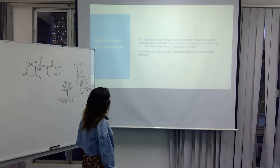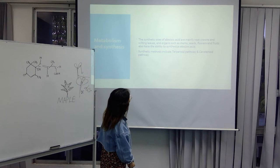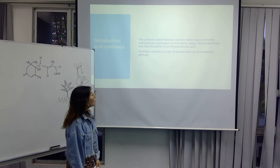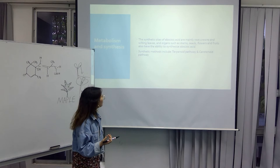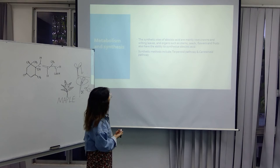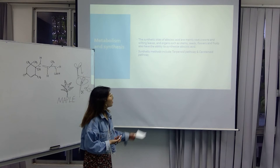So let's move on. The second one is metabolism and synthesis. The synthesis of abscisic acid are mainly from crops and senescing leaves. And organs such as stem, seed, flowers, and fruit also have the ability to synthesize abscisic acid. Synthetic methods include two parallel pathway and carotenoid pathway.